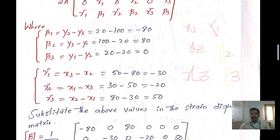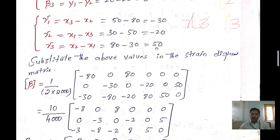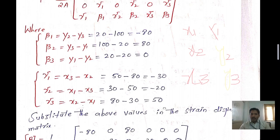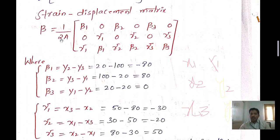For gamma2, eliminate X2 — remaining X1 minus X3 is 30 minus 50 equals minus 20. For gamma3, eliminate the third value — X2 minus X1 is 80 minus 30 equals 50. After getting beta1, beta2, beta3, gamma1, gamma2, and gamma3, substitute into the strain-displacement matrix.